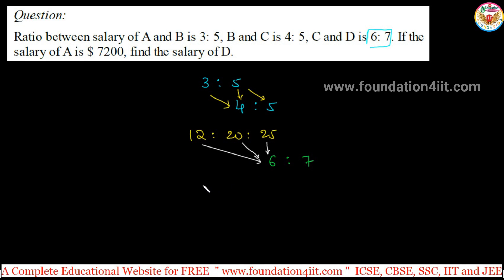So 12 into 6, 72, right? Is to 20 into 6, so 120. 25 into 6 is 150. Again the last one, 25 into 7, 75, 35, 3, 175. So 175. This is the A:B:C:D.